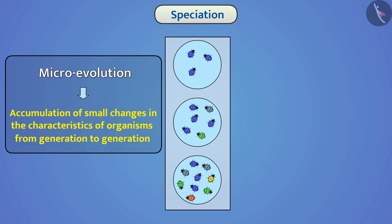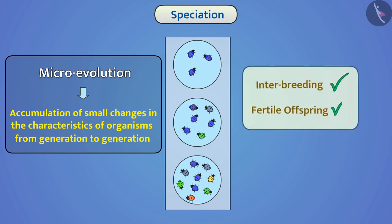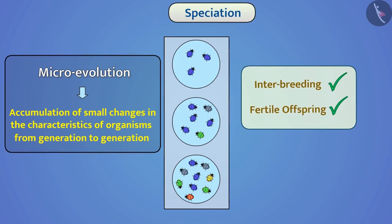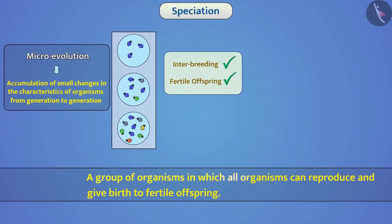Microevolution results in small changes to the normal characteristics of the organism, but still different organisms of the same population can interbreed and produce fertile offspring. A group of organisms in which all organisms can reproduce and give birth to fertile offspring is called species.